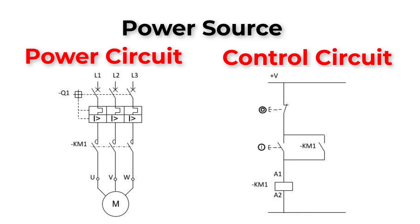In classic control circuits, we have two different circuits: power circuit and control circuit. Power circuit is the main circuit that supplies power to the load. For example, here we have a three phase 380V circuit breaker, contactor, and a three phase motor.